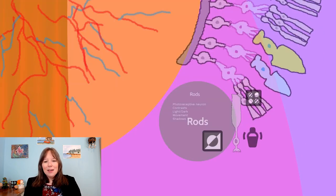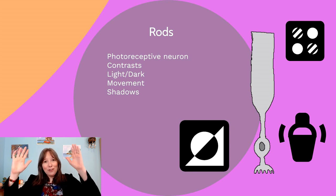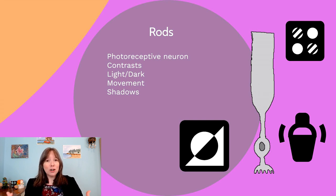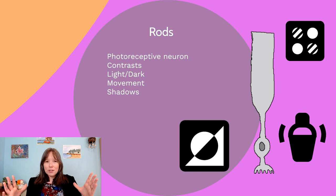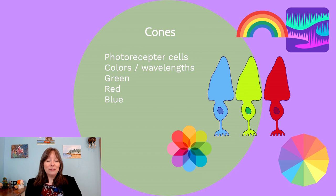Rods are rod-shaped photoreceptors. They have terminal buttons, a soma with a nucleus, and a large photoreceptive body — the rod itself — which is highly receptive to luminescence or brightness. Rods are very sensitive to contrast, the difference between lightness and darkness, making them great at detecting movement and shadows. In dim light, rods are essential; when you enter a dark room things may appear all dark at first, but over time your rods adjust and you can pick up even the smallest contrasts to navigate without bumping into things.